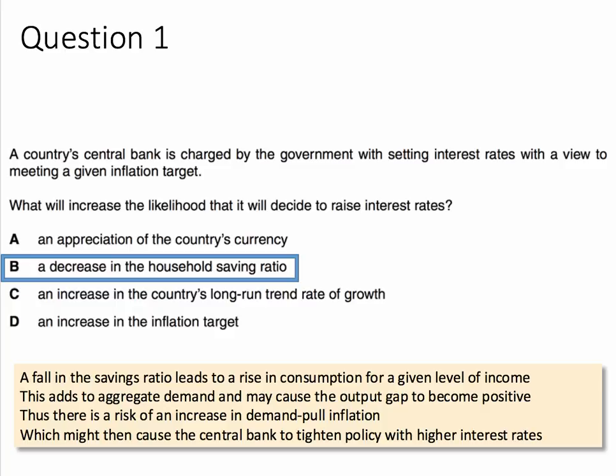An appreciation of the currency, option A, would cause the price of imports to go down — less inflation. C: if the country has a higher trend growth rate, they can tolerate faster growth without causing inflation, so no pressure to raise interest rates. And with D, if there's an increase in the inflation target, the central bank will be under less pressure to use higher interest rates because they're going to tolerate a higher rate of inflation.